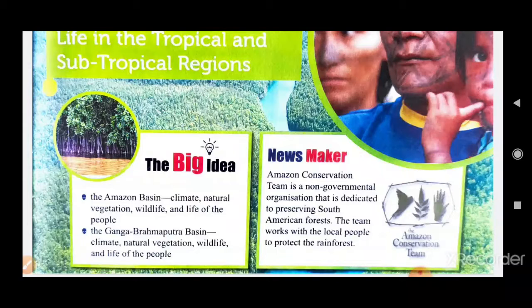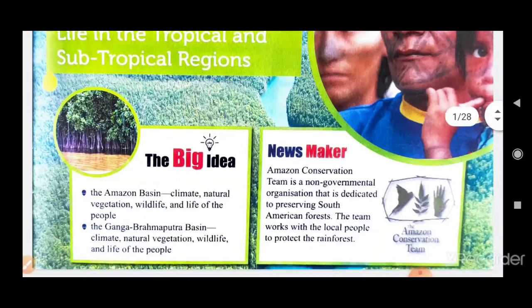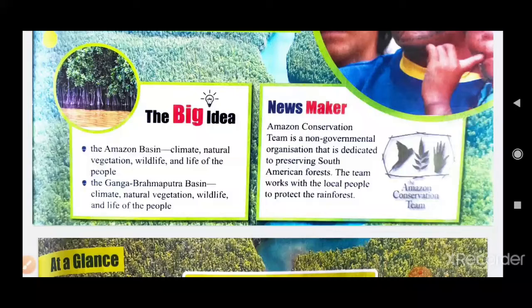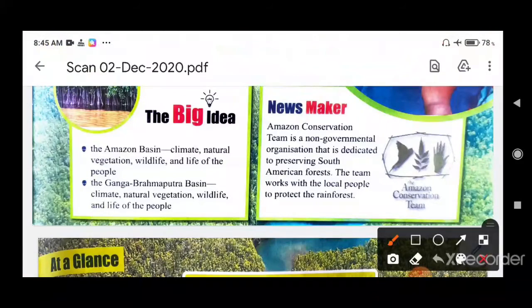In this chapter we will discuss two regions: the tropical region, covering the Amazon Basin, and the subtropical region, covering the Ganga-Brahmaputra region. For the Amazon Basin, we will read about the climate, natural vegetation, wildlife, and life of the people.